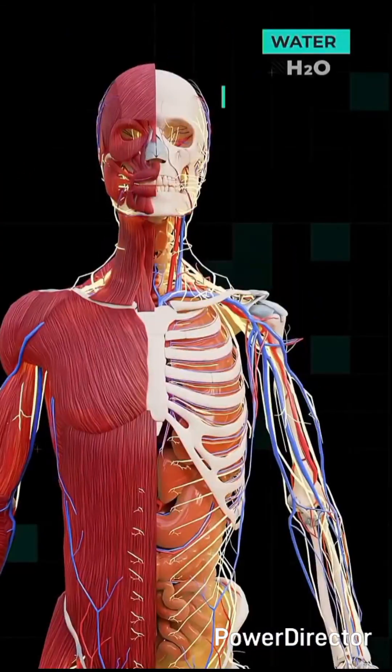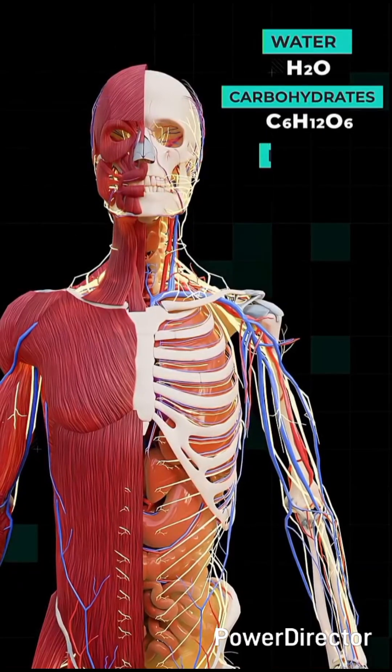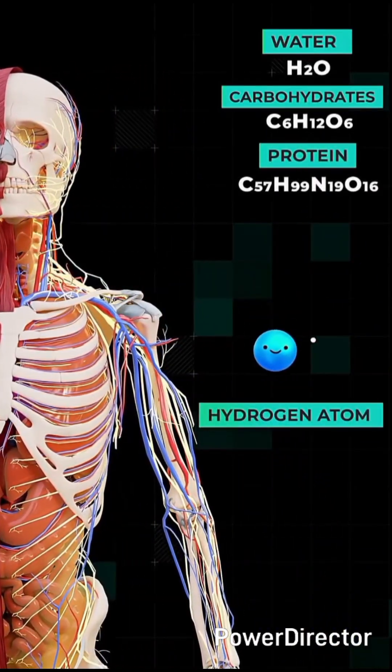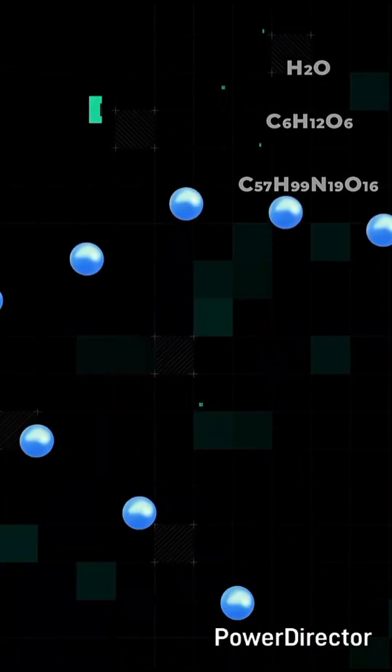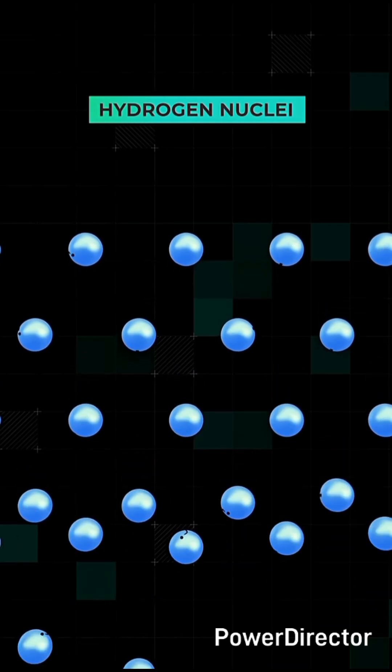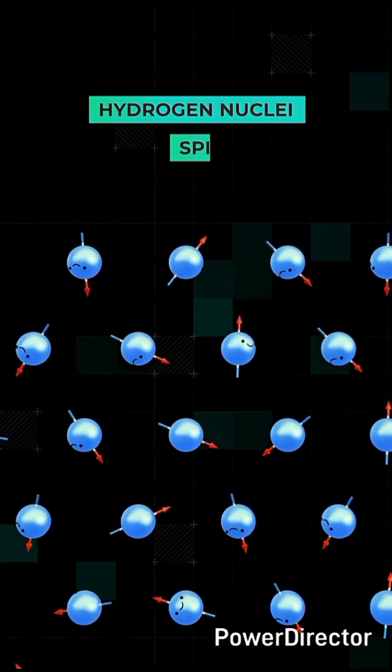Our body is mostly made of water, carbohydrates, and proteins, all of which are rich in hydrogen atoms. Each hydrogen nucleus behaves like a tiny spinning magnet, a property called spin.